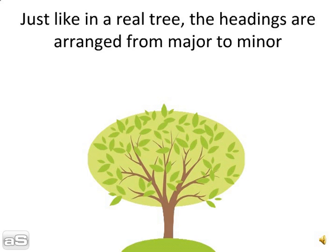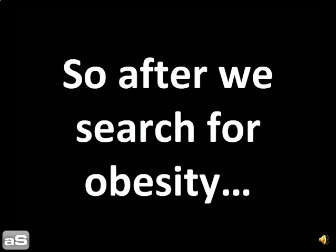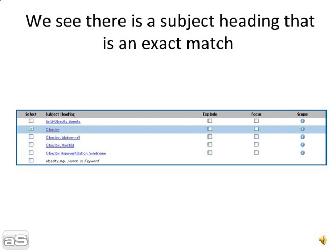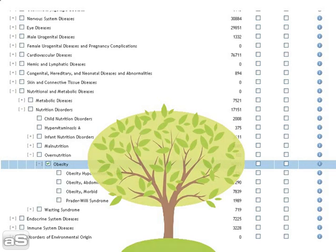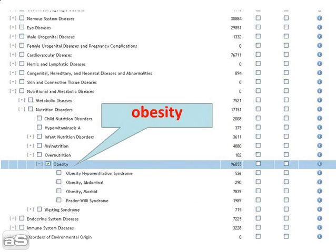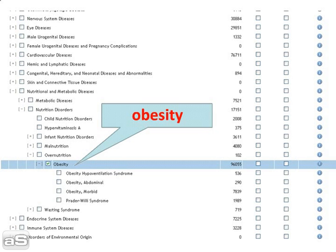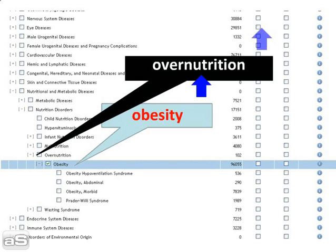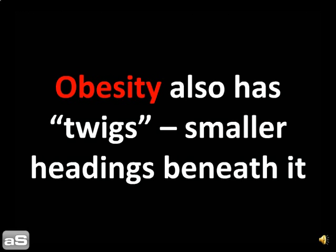Remember our tree? Just like in a real tree, the headings are arranged from major to minor. So after we search for obesity, we see there is a subject heading that is an exact match. Click to see the subject hierarchy. Obesity branches off from larger headings, and obesity also has twigs — smaller headings beneath it.